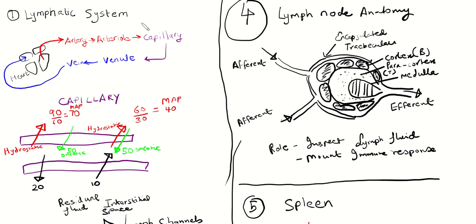What are the organs of the lymphatic system? We have the organ where cells are created — that's the bone marrow, a primary lymphoid organ. Then the thymus is where T lymphocytes mature, also a primary lymphoid organ. So the primary organs are where lymphocytes get created and matured. Those are the two big primary lymphoid organs.